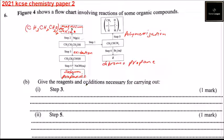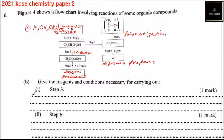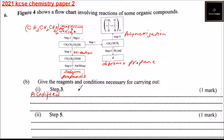Part B: give the reagents and conditions necessary for carrying out Step 3. Step 3 is an oxidation process — that is addition of oxygen. The reagent will be acidified potassium manganate (KMnO4).